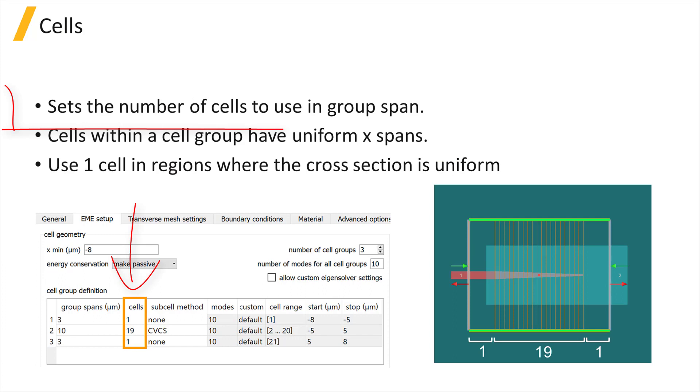Cells sets the number of cells to use over the group span. Cells within a cell group will have uniform Xspans. Use one cell in regions where the cross section is uniform since the modes don't change.